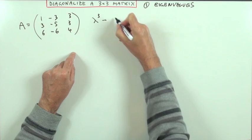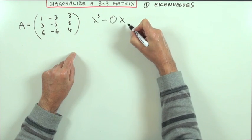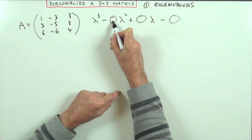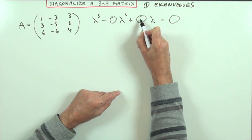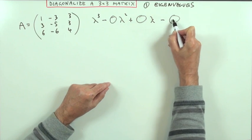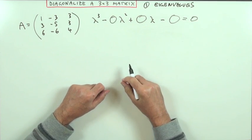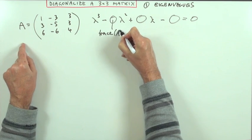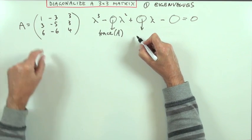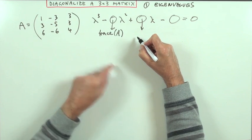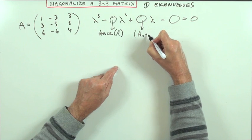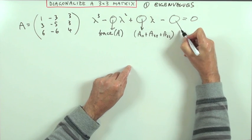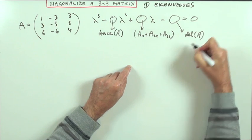The characteristic polynomial goes through determinants of increasing size: λ minus the trace, plus the sum of the 2x2 principal minors, minus the 3x3 determinant, all equal to zero. The first coefficient is the trace of A. The middle terms are the three main diagonal minors — A₁₁, A₂₂, and A₃₃ — which are the minors of those particular diagonal elements. The last term is simply the determinant of the whole 3x3 matrix.